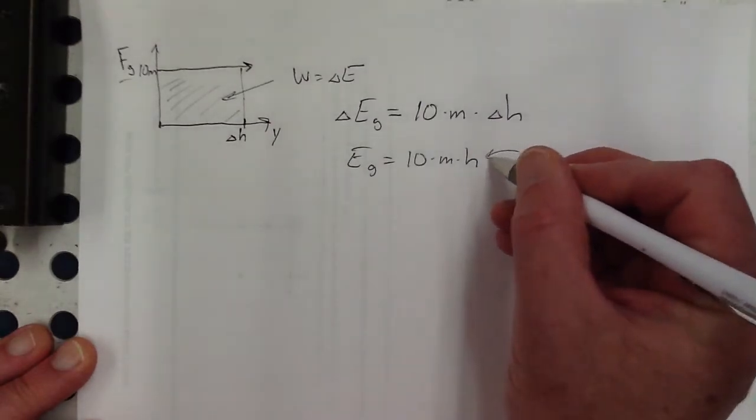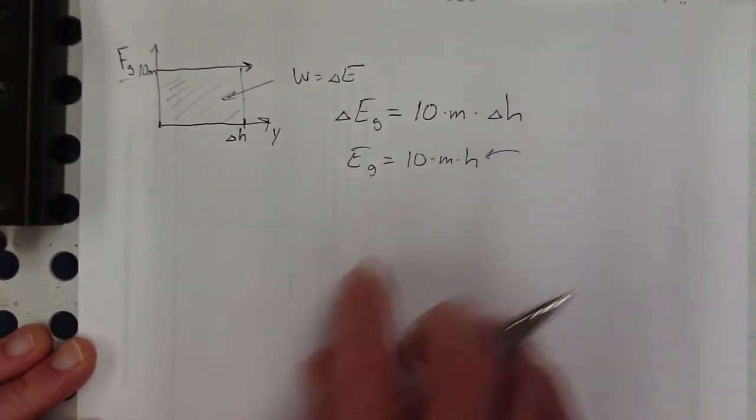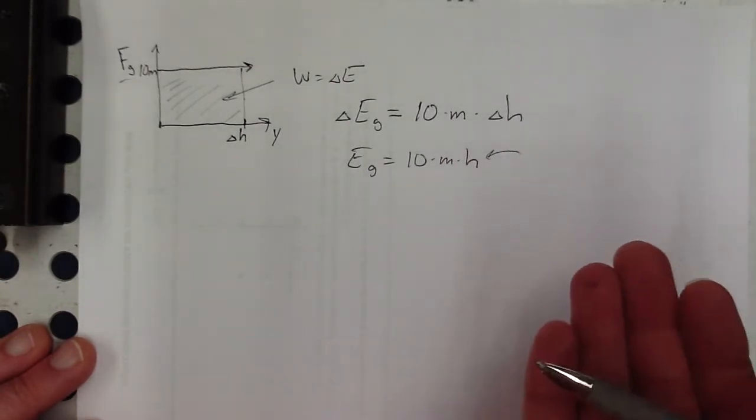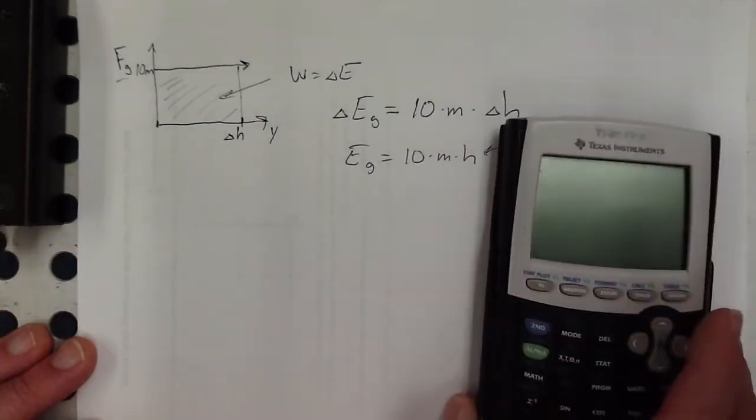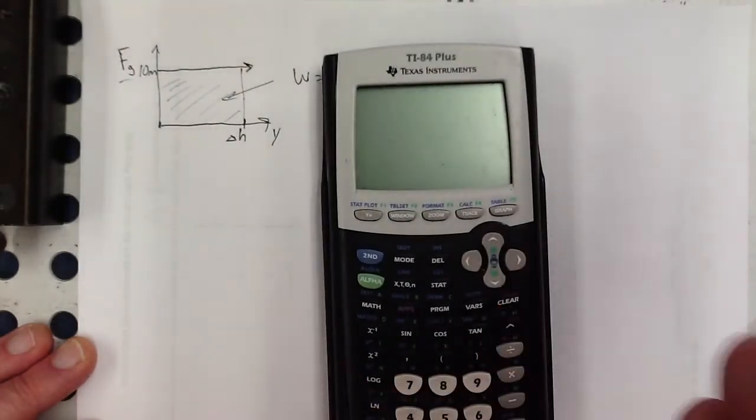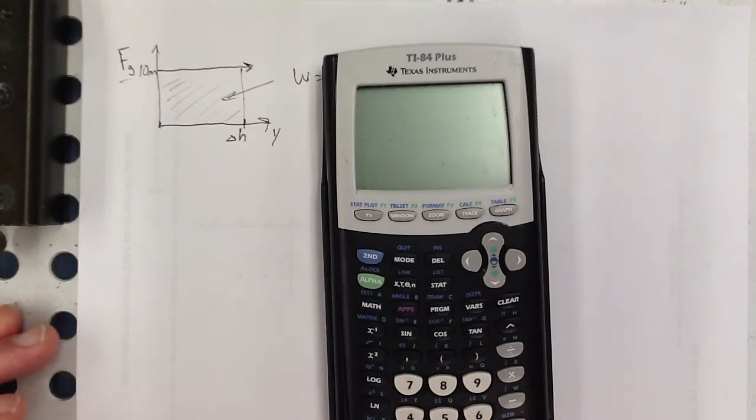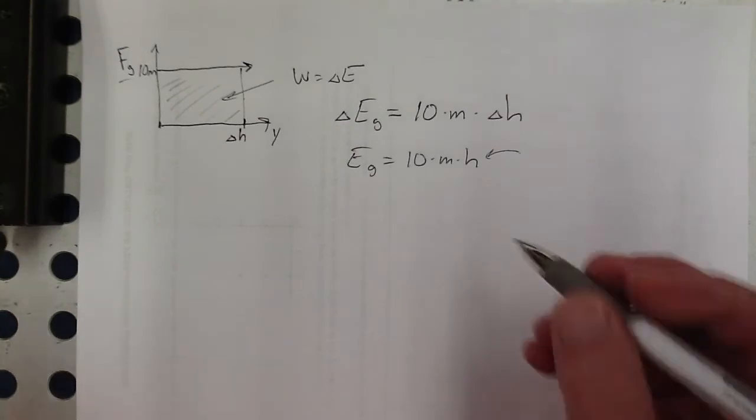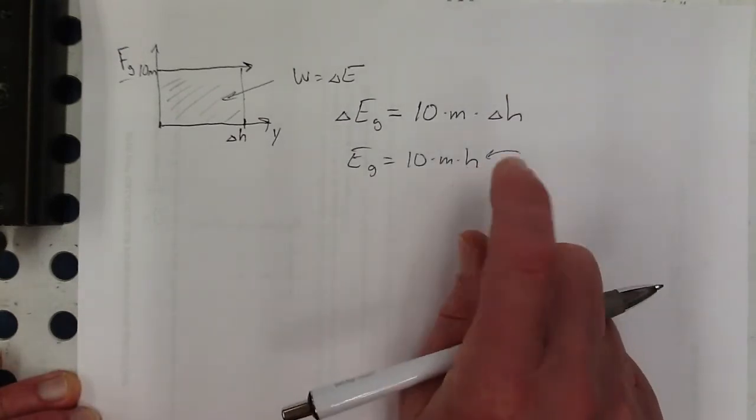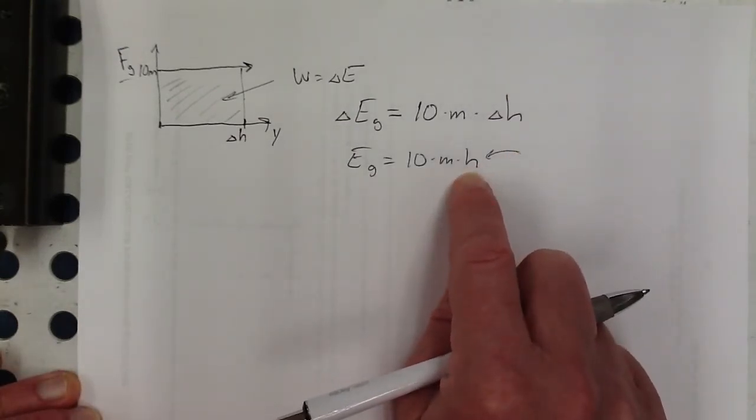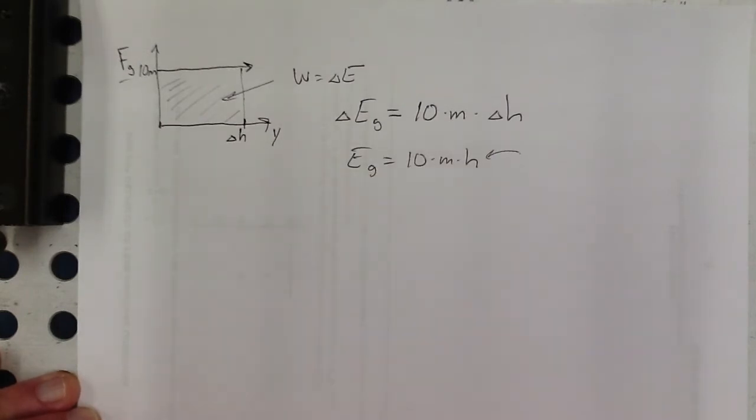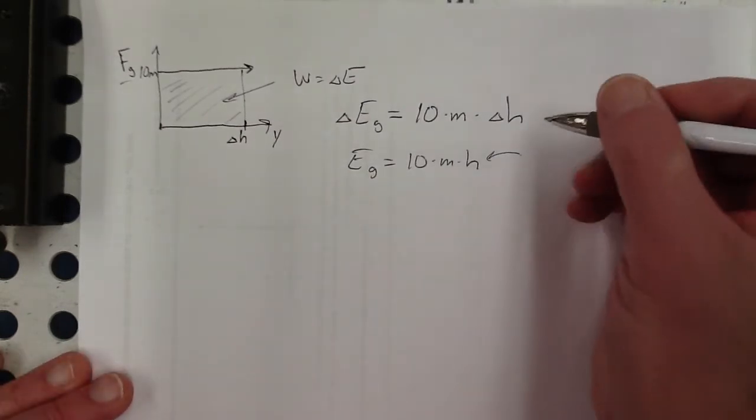Now, you might, there is one little detail we need to talk about here. When you say the height, you might be wondering, well, the height measured from where? Like if we're talking about this calculator sitting on the table here, well, that's fine. But it's also like some distance above the floor. So should I measure it from the floor? Or maybe I'm up on the second floor. Should I measure from the first floor? It doesn't matter what you choose your zero height to be, as long as you're consistent about what that zero height is throughout the problem that you're working.